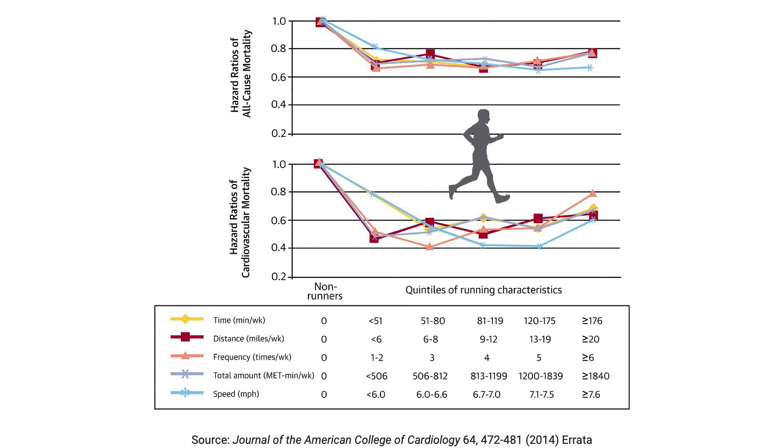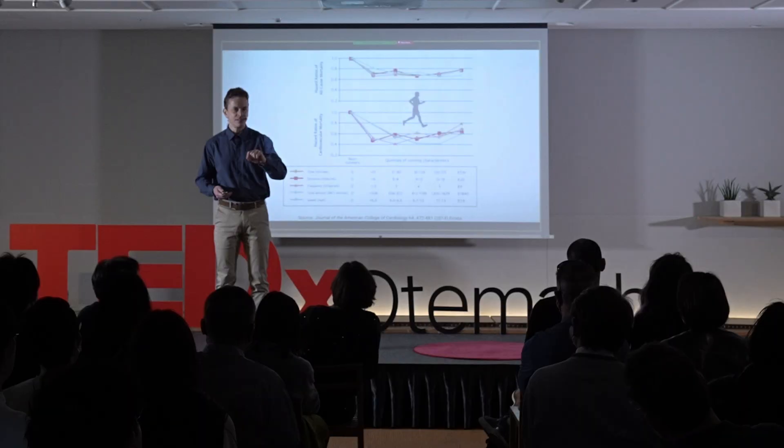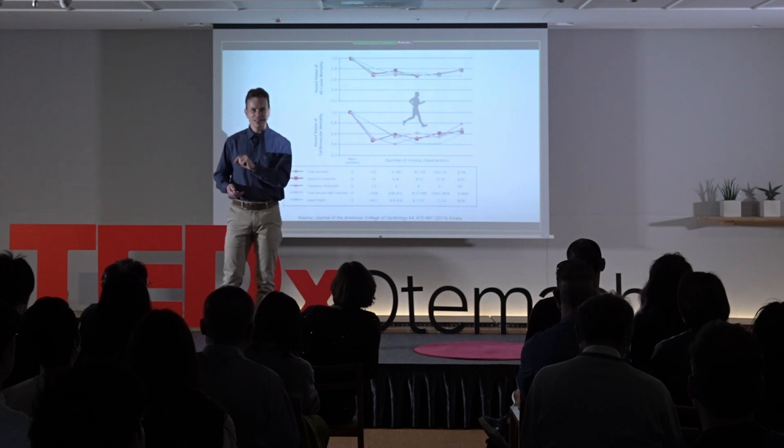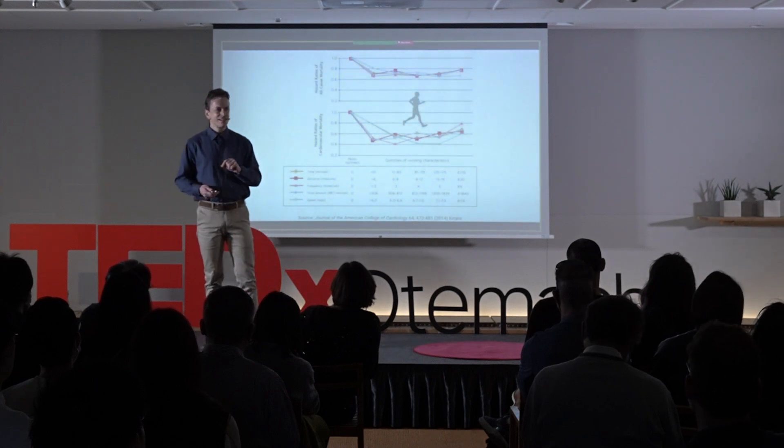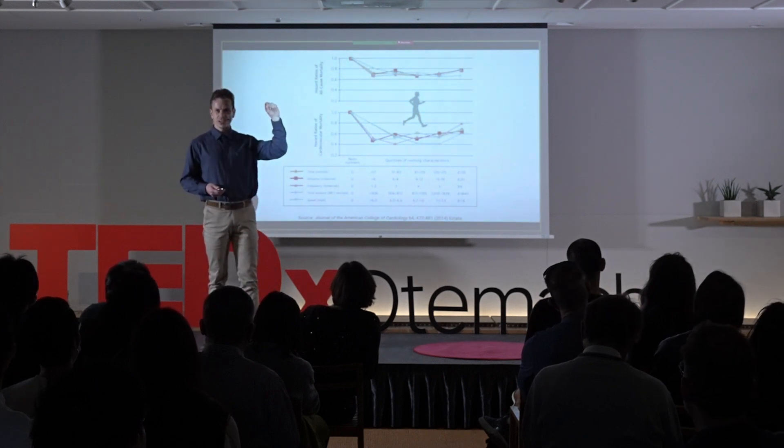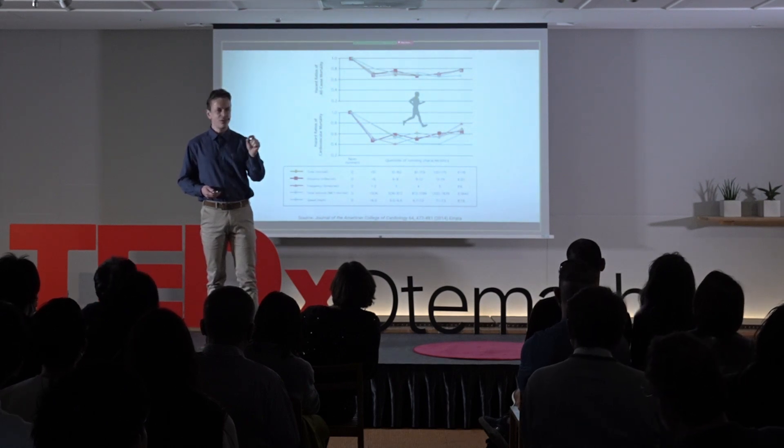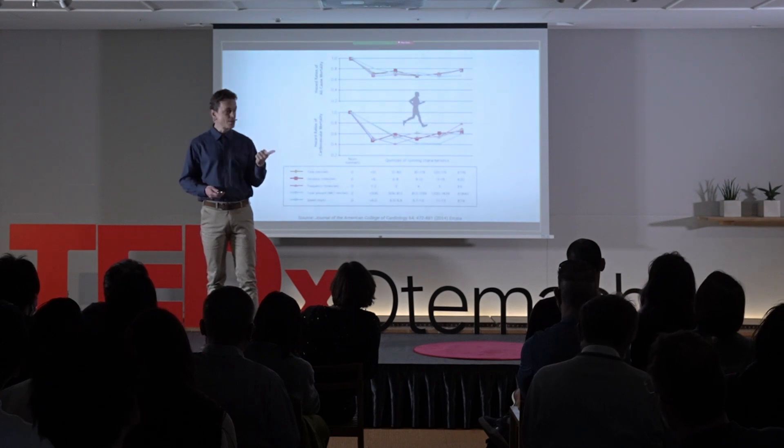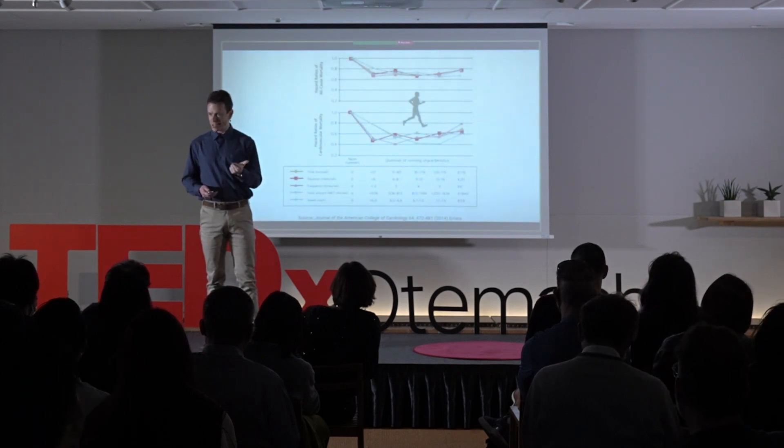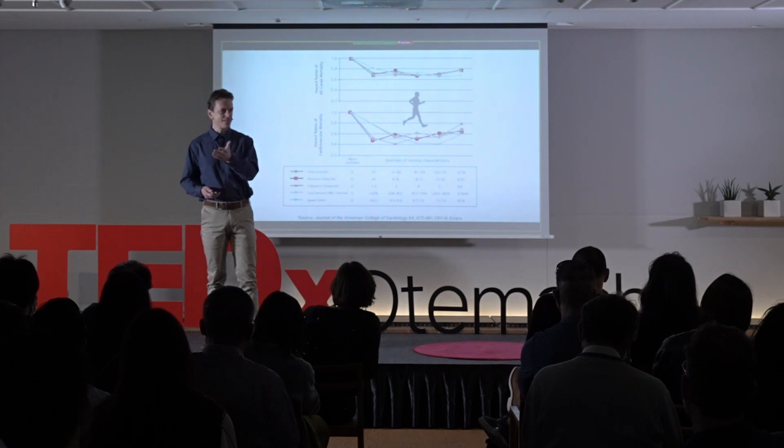And this chart is basically showing how much it reduces premature death. So lower is better. It starts out on the far side as basically taking 100% and saying that this is the standard. And then it says, as you start doing more and more running or jogging, how much do you reduce premature death?